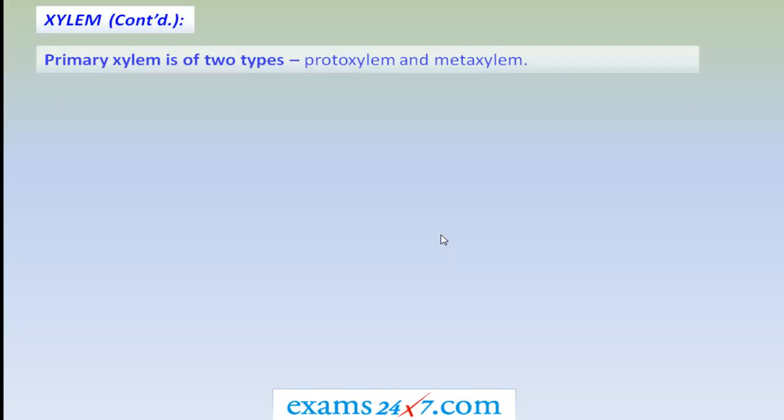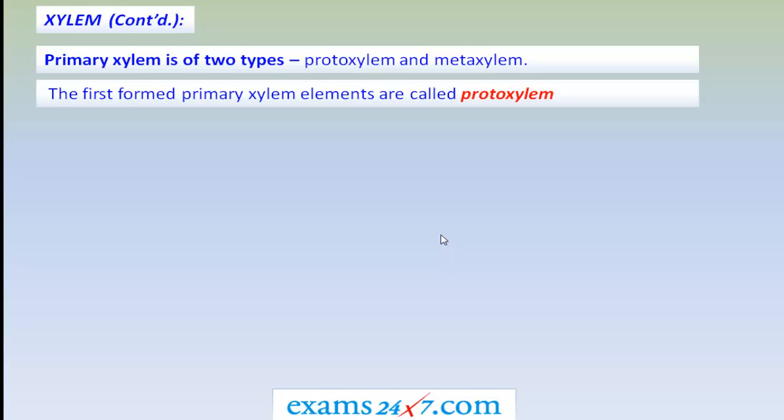Xylem parenchyma are the only living cells in xylem, whose cell walls are thin and basically made up of cellulose. The primary xylem is of two types: protoxylem and metaxylem.